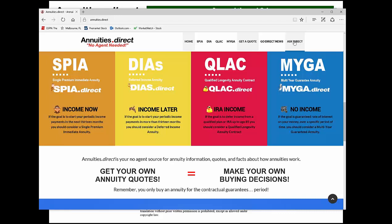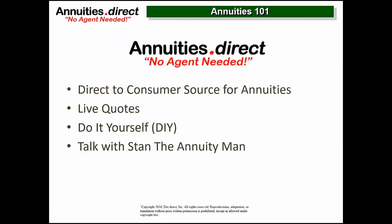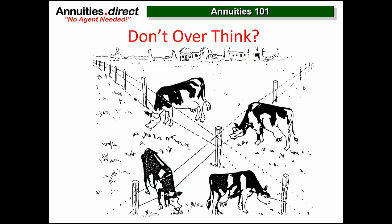Stan has already answered some of those questions because I knew we wouldn't be able to get to all of them. We have some questions in store for tonight that we want to go through and delve into the basics. That's really the gist of it. Absolutely — annuities are not complicated. They're made complicated by agents that don't know any better or have agendas. Don't overthink them.